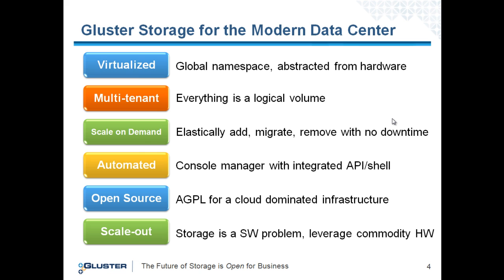We can't manage everything with one person through a single GUI or command line interface. Data center managers are operating at a cloud-scale level, and to do that you have to have automation. Gluster has built a unique console manager that takes the CLI and integrates it with an API shell, so as long as you can script something, you can automate it. One of the powerful things addressing both scalability and economics is the combination of open source software and the scale-out commodity hardware model.